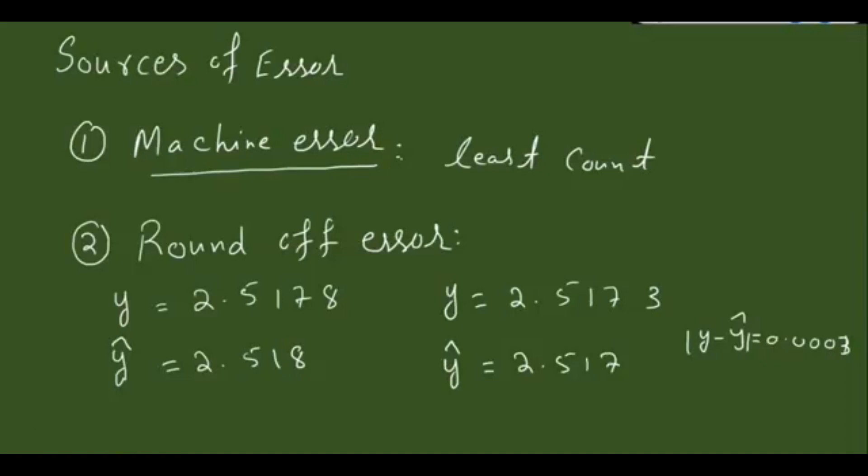There is a third possibility which we usually use in mathematics called truncation error. For example, if I ask you what is the series expansion of e^x, your answer is 1 + x + x²/2! + x³/3! and so on. We usually put dot dot dot. But whenever I ask you, let's use it in a calculation.